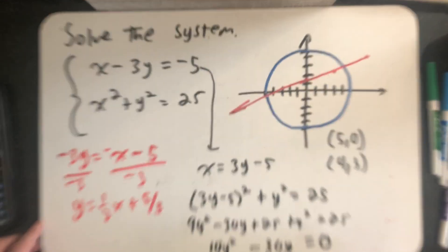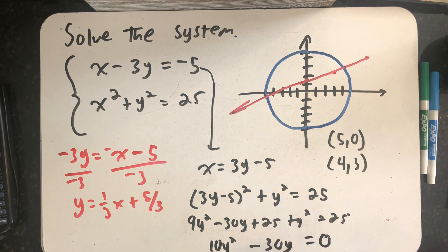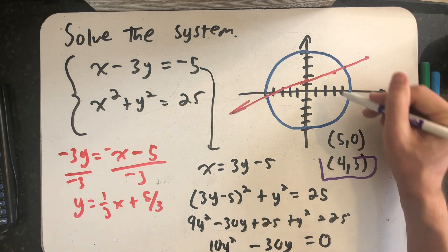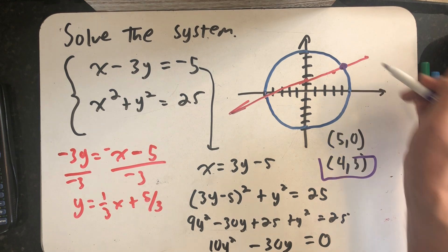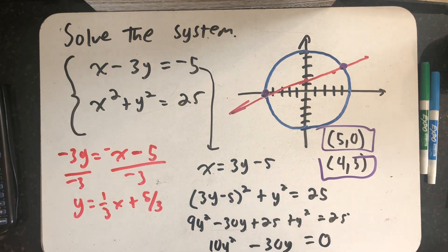And so when I look at the graph I drew, I see (4, 3) as a solution, and that one's not too bad. I missed over here a little bit, but that's okay. (5, 0) is my other solution.